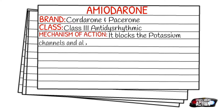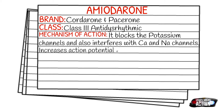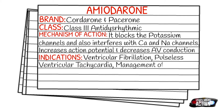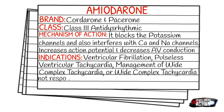Your indications will be ventricular fibrillation, pulseless ventricular tachycardia, management of wide complex tachycardia, or wide complex tachycardia that's not responding to other treatments. For example, if you have a very symptomatic patient in ventricular tachycardia with a pulse and cardioversion isn't working, you can also try amiodarone in these cases.